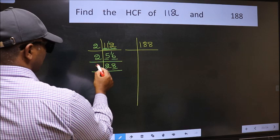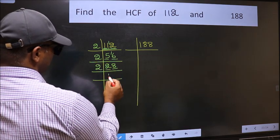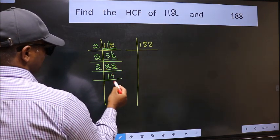Last digit 8, even, so take 2. First number 2, when do we get 2 in the 2 table? 2 times 1 is 2. The other number 8, when do we get 8 in the 2 table? 2 times 4 is 8.